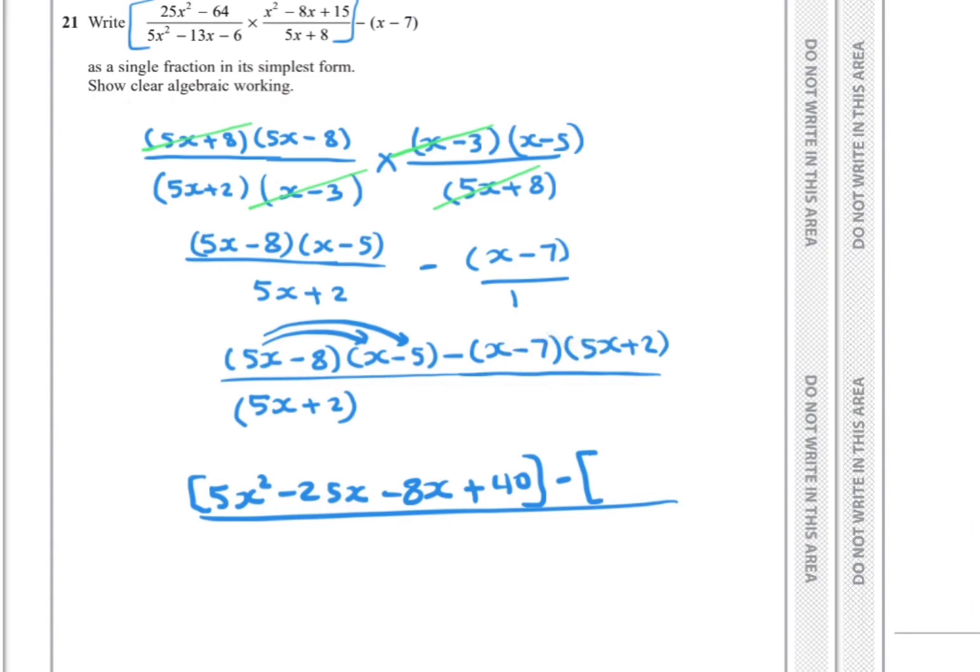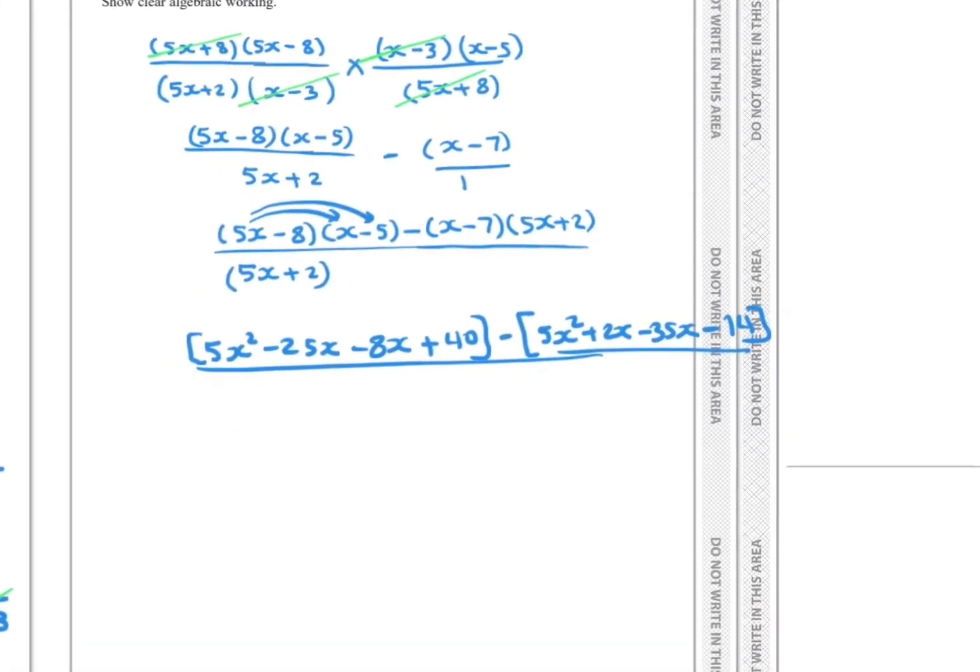Now x times 5x: 5x². x times 2: 2x. -7 times 5x: -35x. -7 times 2: -14. Over the same denominator, which is 5x + 2.